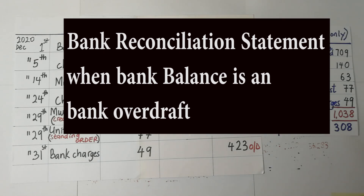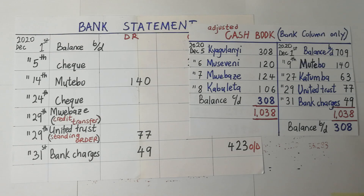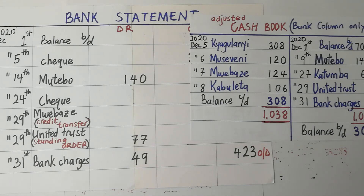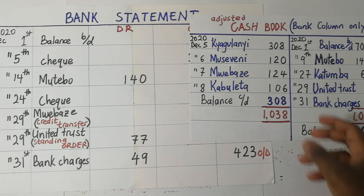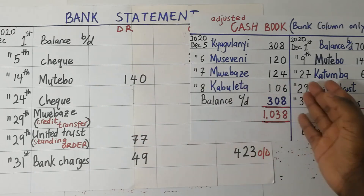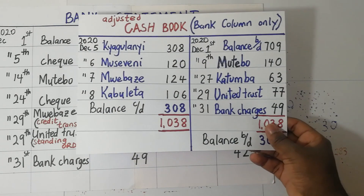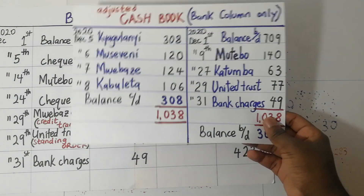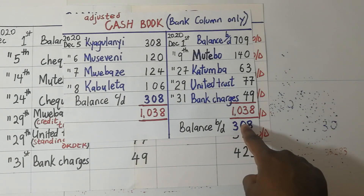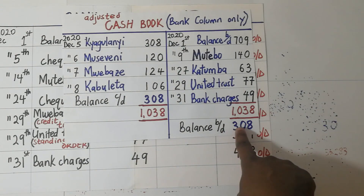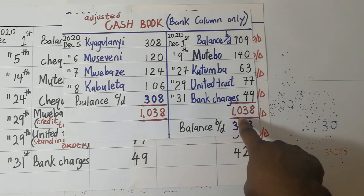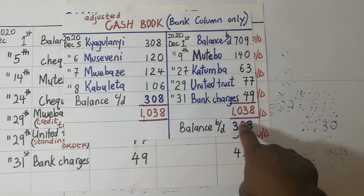Hello everyone, thanks for tuning in. My name is Arnold Ranga-Kuramia and this is Kisembo Academy. Right before you is a bank statement and a cash book. If you look at this cash book right here, you're able to see that it's having a credit balance.